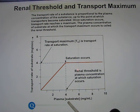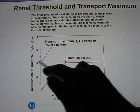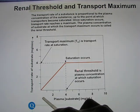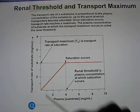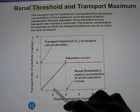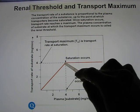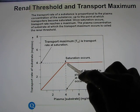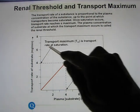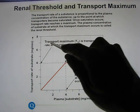The concentration at which saturation occurs is called the renal threshold. In plasma, the renal threshold for glucose is approximately 4 milligrams per milliliter. The y-axis represents the transportation rate — milligrams per minute. Below the renal threshold, reabsorption increases linearly with concentration. Once it reaches its maximum rate, we call that the transport maximum (Tm).